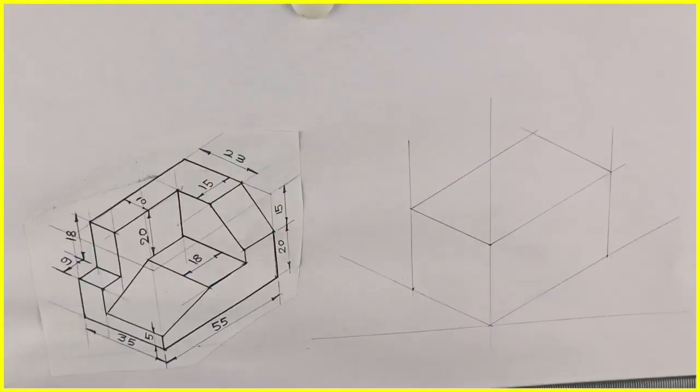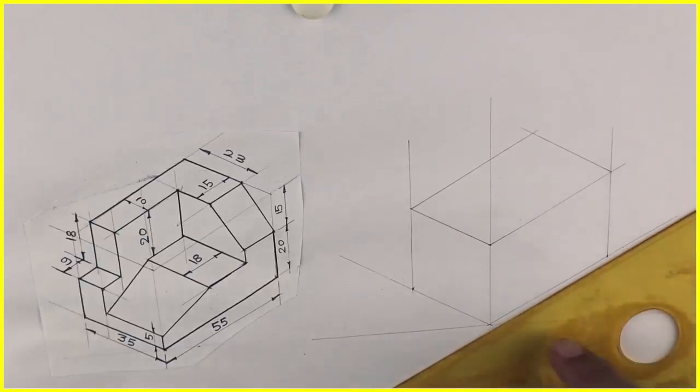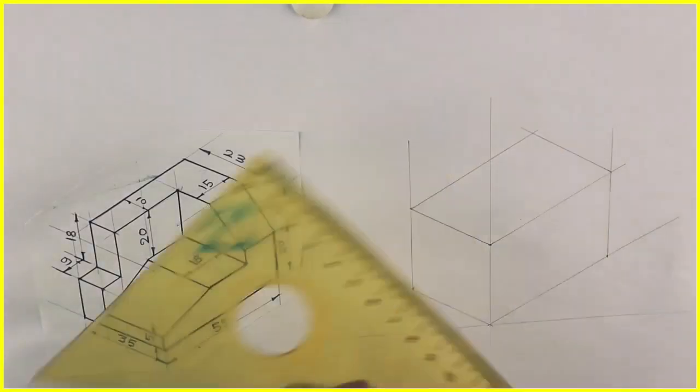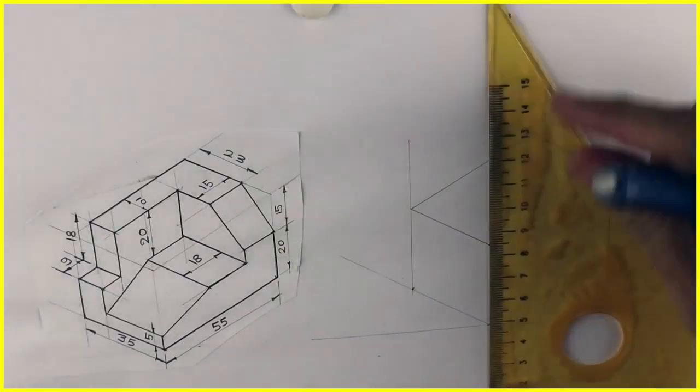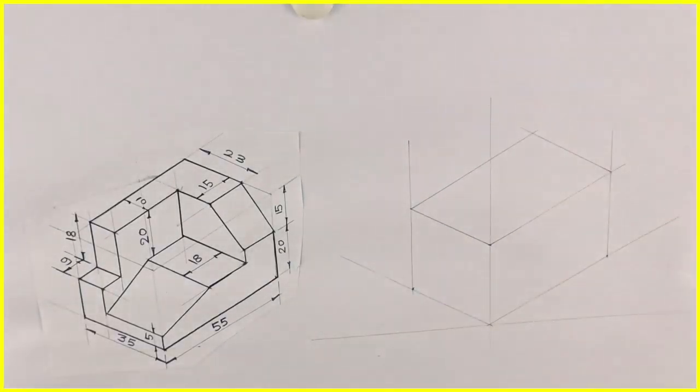Welcome to technical drawing. In this video, we'll draw a copy isometric. We'll take 30-30 degree. We'll take 55, 35, and 35 and complete this box.